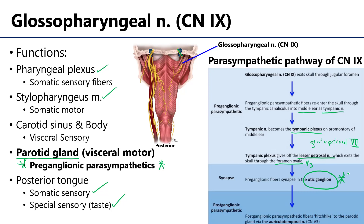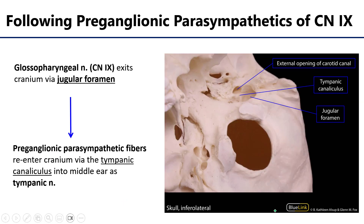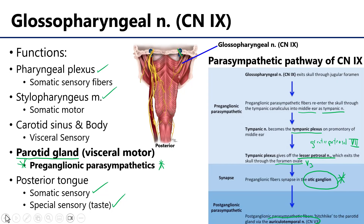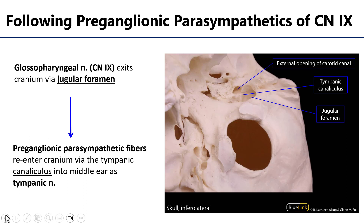The otic ganglion is sitting in a region known as the infratemporal fossa, and those preganglionic parasympathetic fibers synapse here. Postganglionic fibers from that ganglion are then going to hitchhike onto a branch of V3 called the auriculotemporal nerve. That auriculotemporal nerve runs superiorly through the parotid gland and goes up along with the superficial temporal artery and vein to provide sensory information from the skin of that region. Before it completely ascends the lateral face, it gives off those postganglionic fibers to the parotid gland.